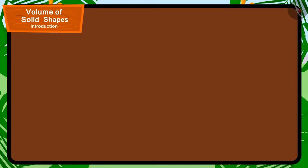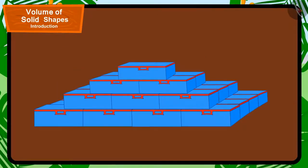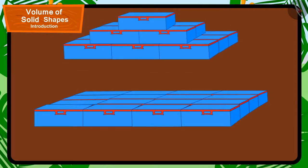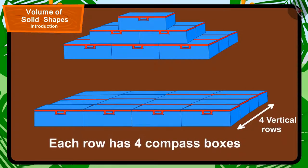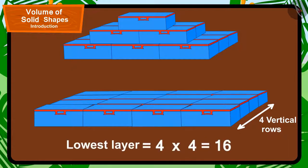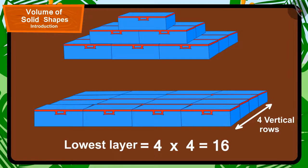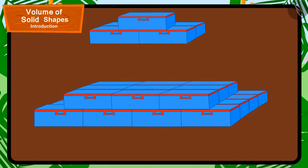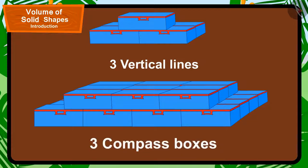Let's first figure out the number of compass boxes being used in this shape. The lowest layer of this shape has 4 vertical rows and each row has 4 compass boxes. That means 4 rows multiplied by 4 boxes, that is 16 boxes in the lowest layer. The layer above it has 3 vertical lines and each vertical line has 3 compass boxes.